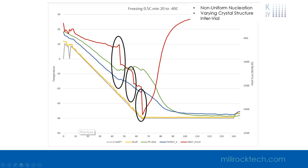We see one, two, three unique nucleation events in this particular batch. In most batches we see four, maybe five. You can get a good idea that the vial that nucleated last has the highest heat flow and probably the lowest product temperature — and this is going to be the vial that takes the longest to dry.